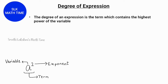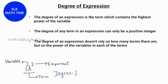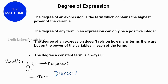So in this term, our degree is 2. Also, remember that the degree of any term in an expression can only be a positive integer, and 2 is a positive number. Another thing to keep in mind is that the degree of an expression doesn't depend on how many terms there are, but on the power of the variables in each of the terms. One more thing is that the degree of a constant term is always 0.